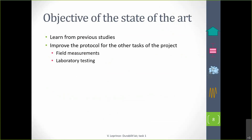As this state-of-the-art was the first part of the Durabilitaire project, the objective here was not only to learn from previous studies and their results, but also to improve the protocol for all the tasks of the project, such as the field measurements and the laboratory testing. One of the results of this state-of-the-art is recommendations on the protocol to perform field measurements and laboratory testing of durability.